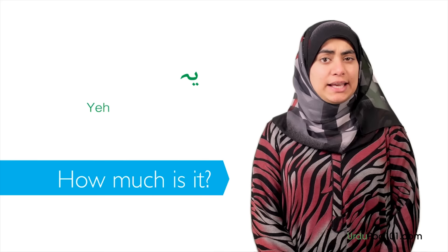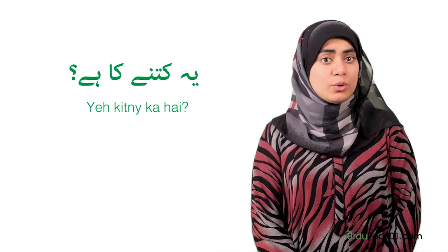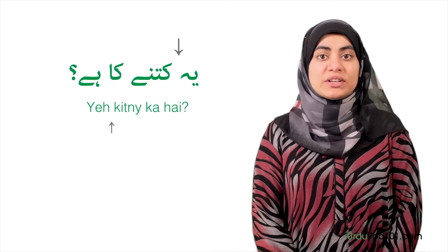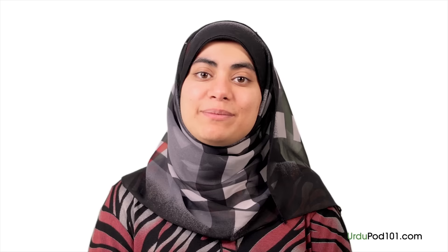If you want to be more specific and refer to a certain object, insert the object between is and ka. For example, hat in Urdu is topi, so how much is this hat becomes is topi ka dam kya hai. If you want to buy several things, use in ka — meaning these — so maaf kiijie, in ka dam kya hai means excuse me, how much are these? The shop clerk can answer: is ka dam [price] hai, for example is ka dam pachaas rupee hai — it costs 50 rupees. Another common way to ask is yeh kitne ka hai, and to be specific: yeh seb kitne ka hai — how much is this apple?